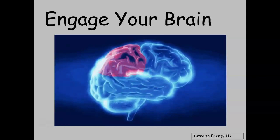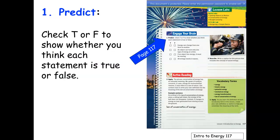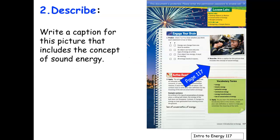You're going to start out with an Engage Brain on page 117. You have four questions in which you are going to check either true or false. Question 2 asks you to describe and write a caption about what is going on in the image of the marching band in terms of sound energy.